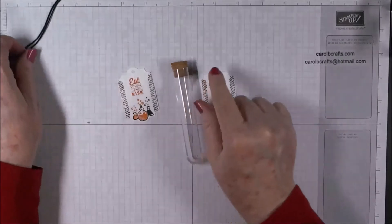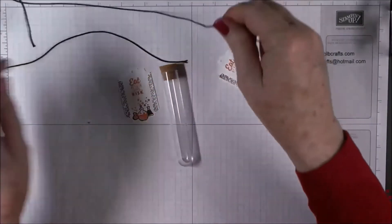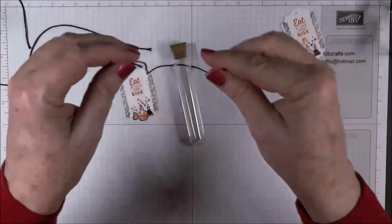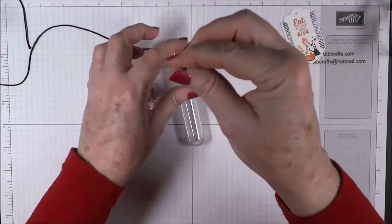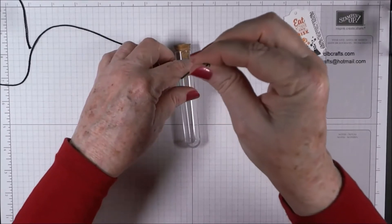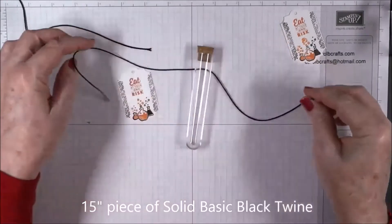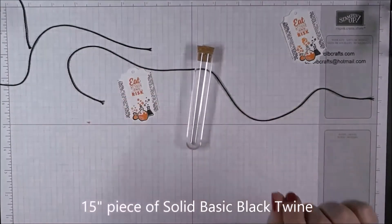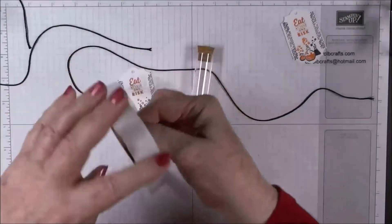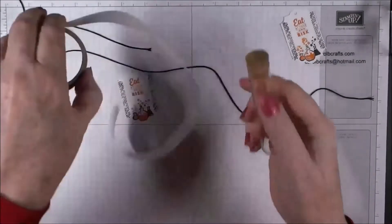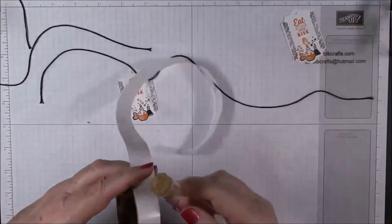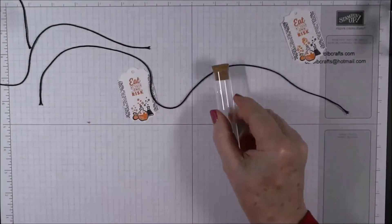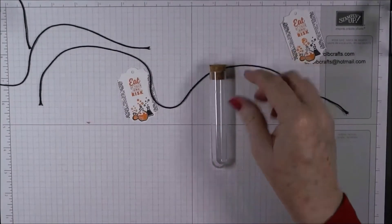And one of our pieces of basic black solid black twine, and we're going to decide where we want it, and then we're going to put a glue dot where we want it. So I want it about right there. It's about an inch from the top of the plastic.